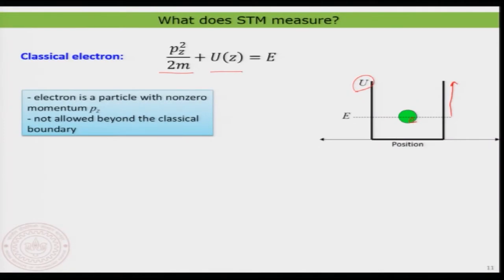We are not exciting by any external agency, so we assume the electron should remain at that place. The question is: what is the probability of finding this electron, and where is that probability maximum? If you plot probability as a function of position x — this is a simple one-dimensional case — you would find that the probability of finding the electron in the box is maximum where the electron is placed.